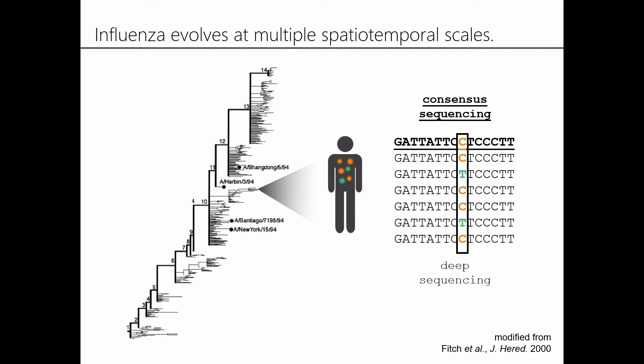Until recently, almost everything that we've learned about flu evolution has come from consensus sequencing, which effectively averages across all of this genetic variation. That can tell us a lot, but we are missing a lot of subtler evolutionary dynamics. More recently, high-throughput deep sequencing has made it a lot easier for us to zoom into a viral population and try to understand its really fine-grained evolutionary dynamics. And that's what I'll tell you about today.